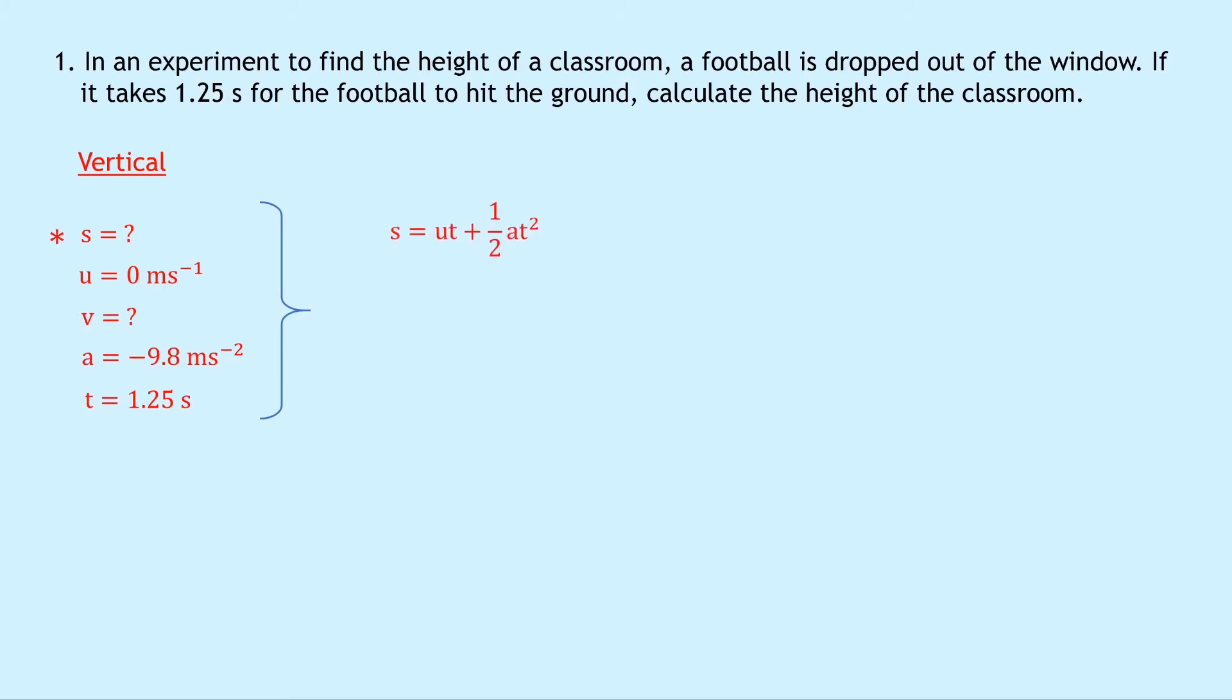And substituting in our numbers now, we get 0 times 1.25 plus a half times minus 9.8 times 1.25 squared. And notice that this is just going to disappear because we've got 0 times something. And simplifying this, we get minus 7.7 meters.